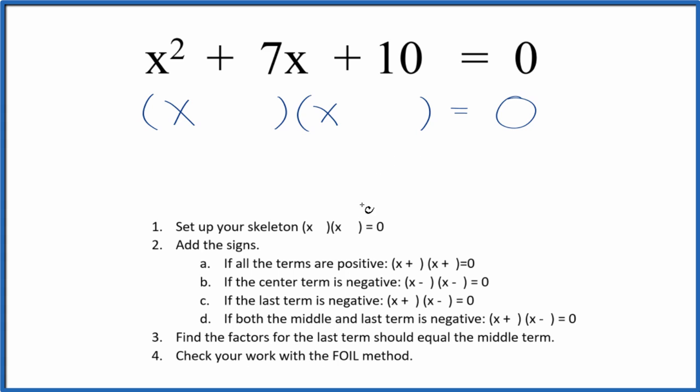Once we have that skeleton equation we can add the signs. So we have a positive and a positive. If all the terms are positive, we're just going to put positives in our skeleton equation like this.